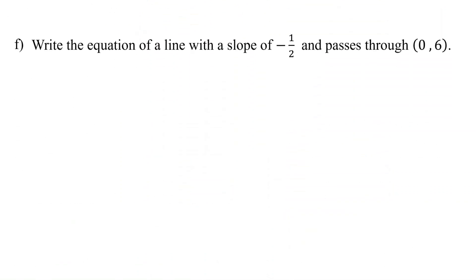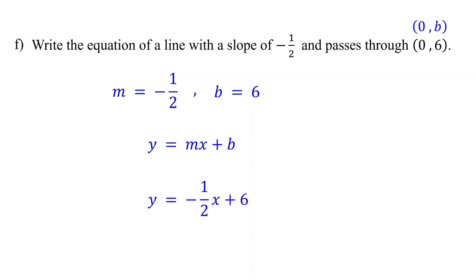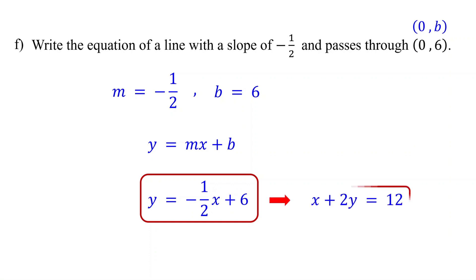In the next example, the question does not mention the y-intercept. It states a slope of negative 1 half and passes through 0 comma 6. Remember, if the x-coordinate of a point is 0, that point is the y-intercept, even if not stated — the y-intercept occurs when x is 0. So here, m is negative 1 half and b is 6. This is the equation in slope-intercept form. For practice, you can pause the video and convert it to standard form.